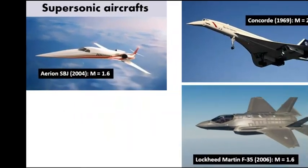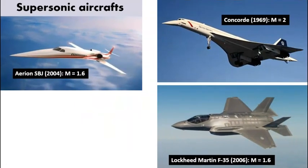What you can see here are some examples of supersonic aircrafts. Aerion is a modern business jet with a maximum speed of Mach 1.6. Concorde was a transport aircraft built in the 1960s and flown at maximum speed of Mach 2. Lockheed Martin F-35 is a fighter jet with a maximum speed of Mach 1.6. They all share a few common design characteristics.